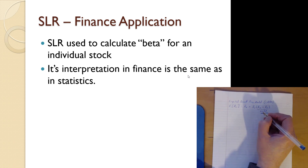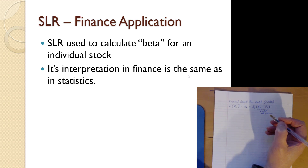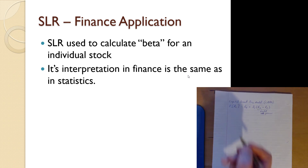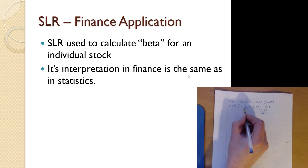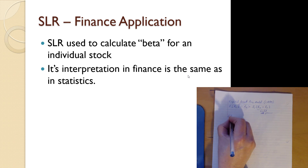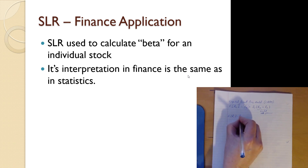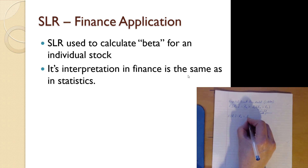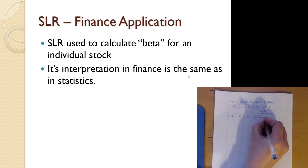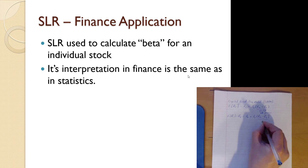The market rate of return — RM — is the return on an index. For instance, in Canada we have the TSX on the Toronto Stock Exchange, TSX/S&P, as an index return. The risk-free rate stays the same. I moved the model over and looked at the expected return for a stock minus the risk-free rate, equaling beta zero plus beta one times the market rate of return minus the risk-free rate — that market premium is essentially the X variable.